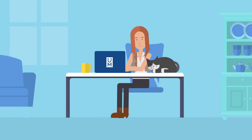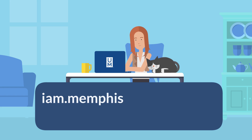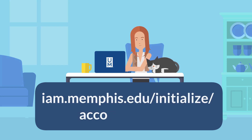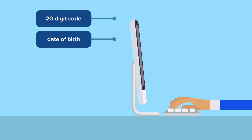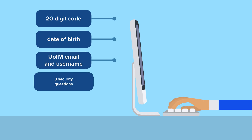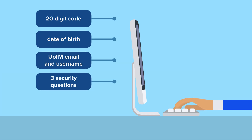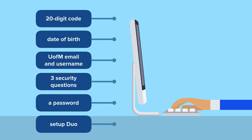When you are ready to set up your student account, go to iam.memphis.edu/initialize/accountcode.jsf. Enter in the 20-digit code, enter your date of birth, confirm your U of M email and username, create three security questions, create a password, and set up DUO.